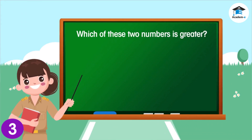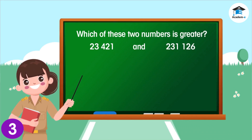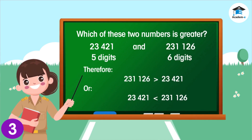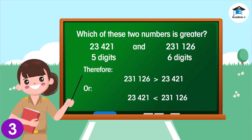Which of these two numbers is greater? This is the bigger number. Though they have the same first digits, the value of 2 here is 200,000, while the value of the 2 here is just 20,000. The number with more digits will always be greater than a number with fewer digits. Therefore, 231,126 is greater than 23,421. Or, 23,421 is less than 231,126.